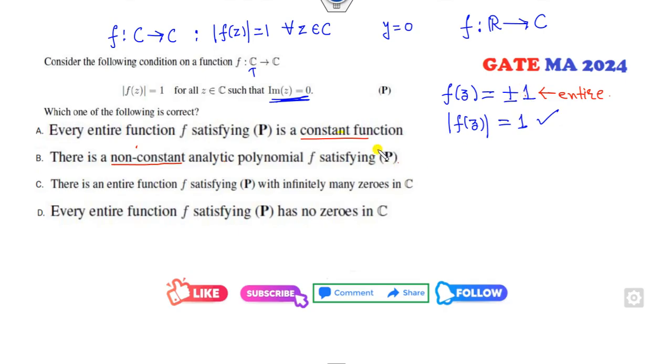There is an analytic function which has infinitely many zeros, but it has no zeros, so this option is also canceled. Every entire function has no zero—that is also a correct statement, but we can't take it.